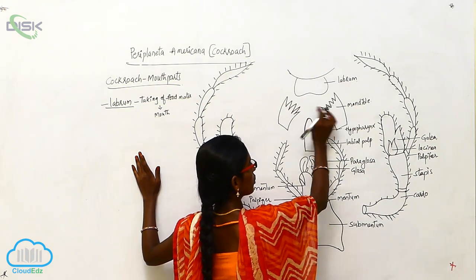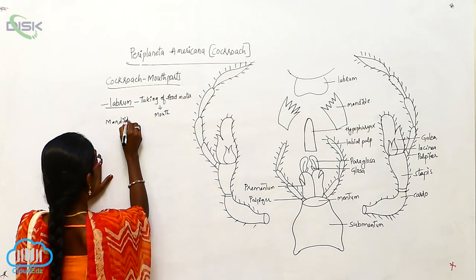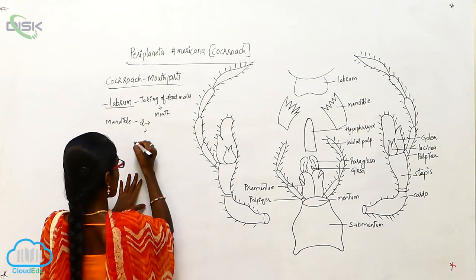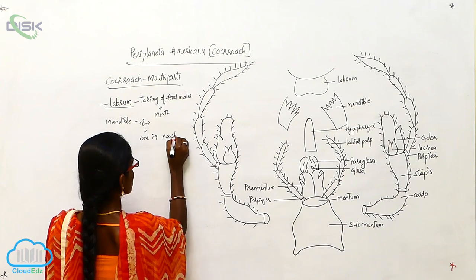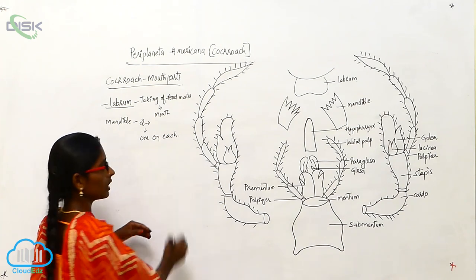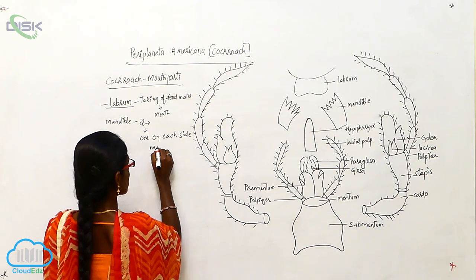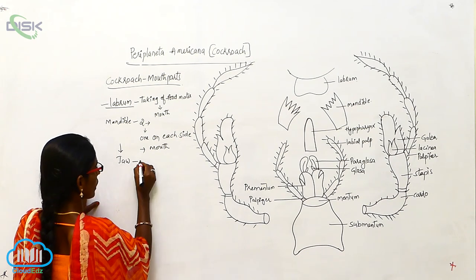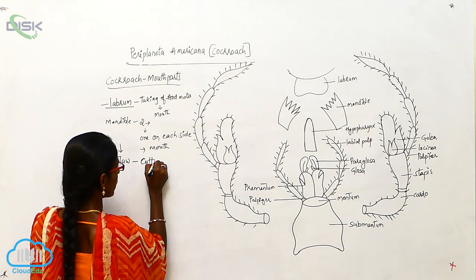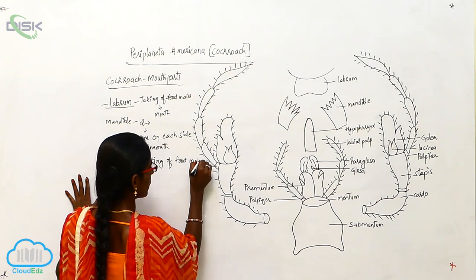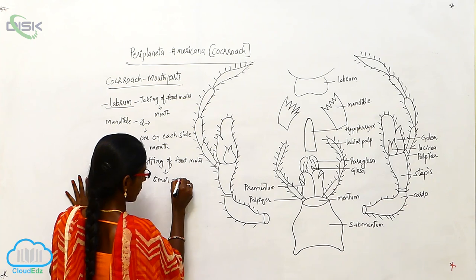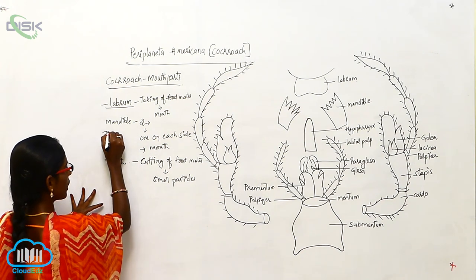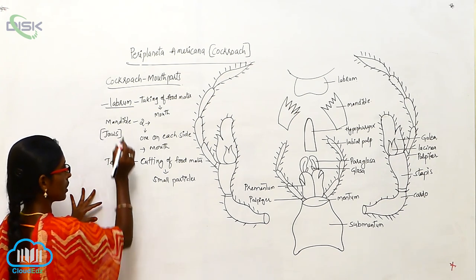The mandibles are jaw-like structures. There are two mandibles, one on each side of the mouth. They act like jaws for the cutting of food material into small particles. The mandibles are also called jaws, and they act like teeth.